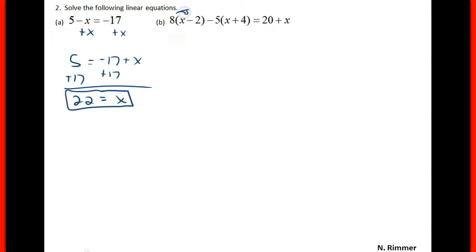We have to distribute here and get 8x minus 16 minus 5x minus 20, and that's supposed to be equal to 20 plus x on the right hand side.